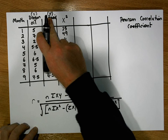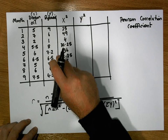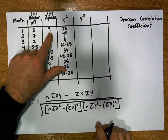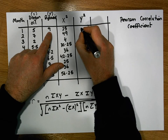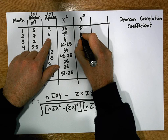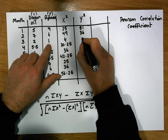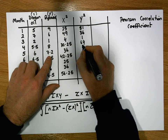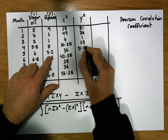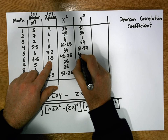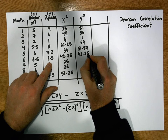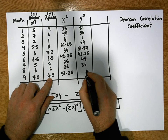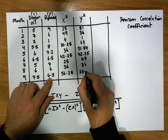Next we construct a y squared column — the square of each dependent variable value. 9 squared is 81. 6 squared is 36. 1 squared is 1. 8 squared is 64. 7.2 squared is 51.84. 6.5 squared is 42.25. 7 squared is 49. 6 squared is 36. And 4.5 squared is 20.25.